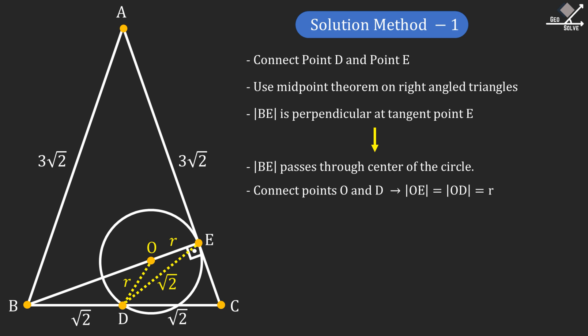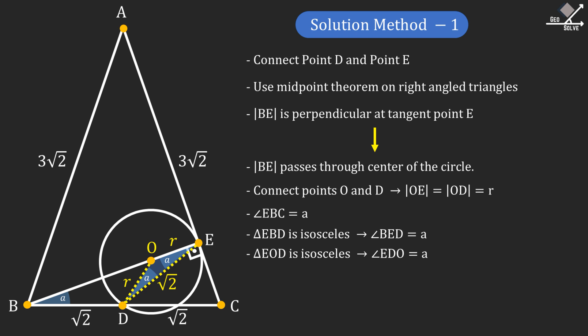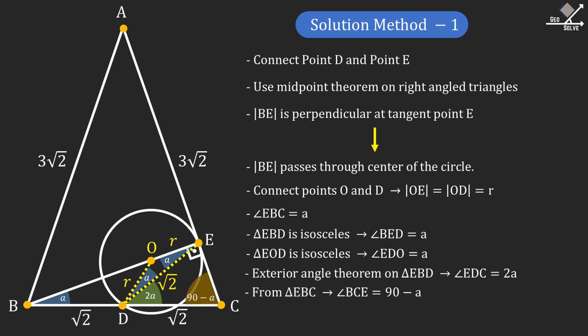Now let's call angle EBC as A. Since triangle EBD is an isosceles triangle, angle BED will also be A. Triangle EOD is also an isosceles triangle, so angle EDO is also A. Using the exterior angle theorem on triangle EBD, angle EDC can be calculated as 2A. From triangle EBC, we can see that angle BCE is 90 minus A.